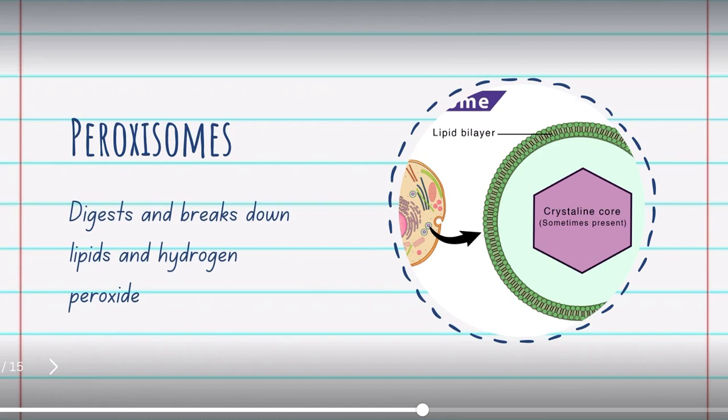Peroxisomes. Peroxisomes are like the recycling department. They digest and break down lipids and hydrogen peroxide.